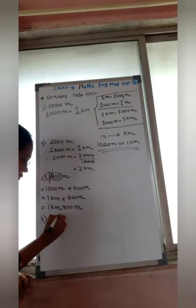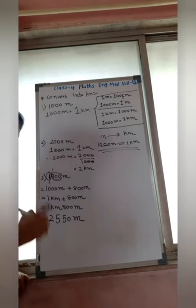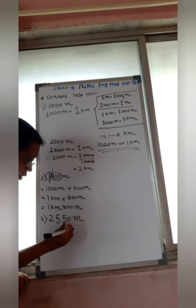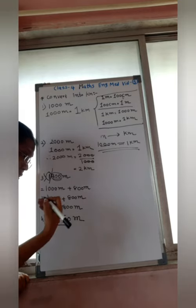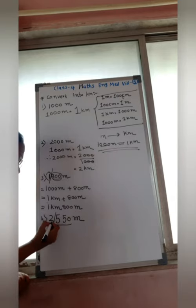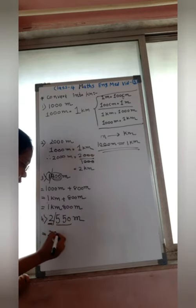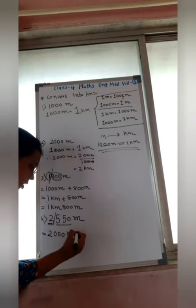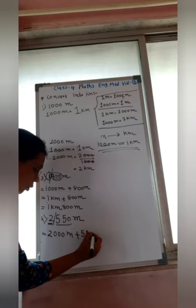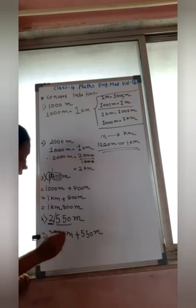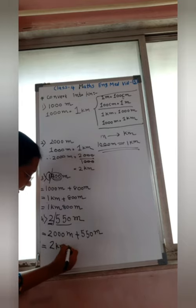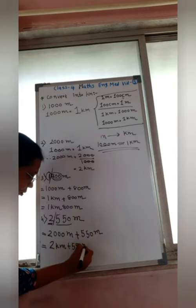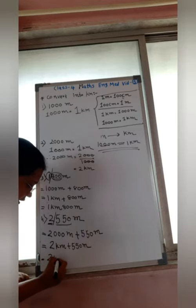Last: 2,550 meter. Same process — count 3 digits from the right, put a slash mark. The kilometer part is 2 and the meter part is 550. Expand: 2,000 meter plus 550 meter. Since 1,000 meter equals 1 kilometer, 2,000 meter equals 2 kilometer. So the answer is 2 kilometer and 550 meter.